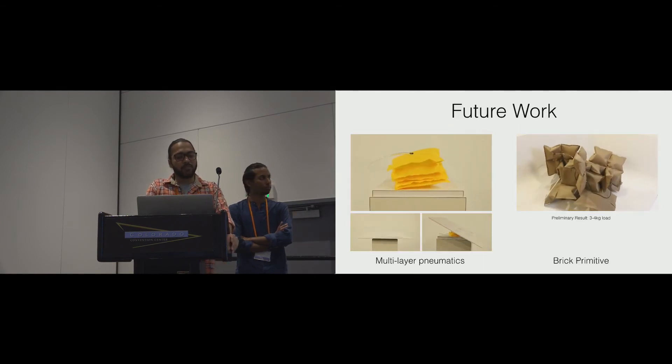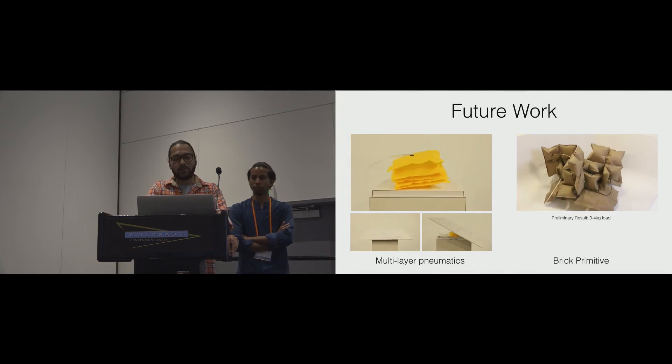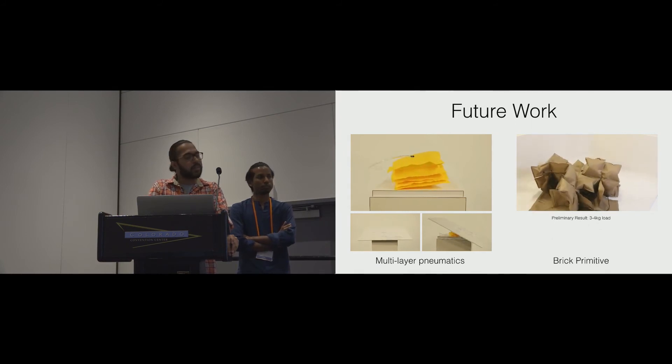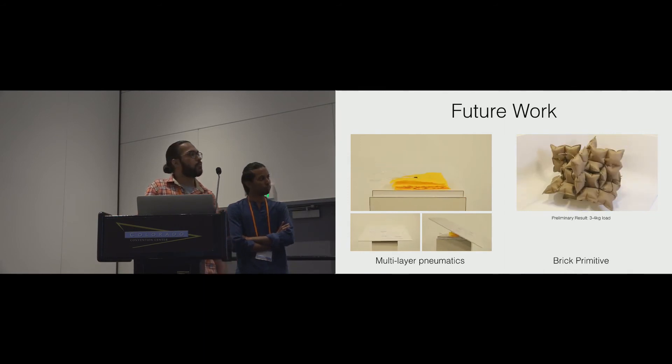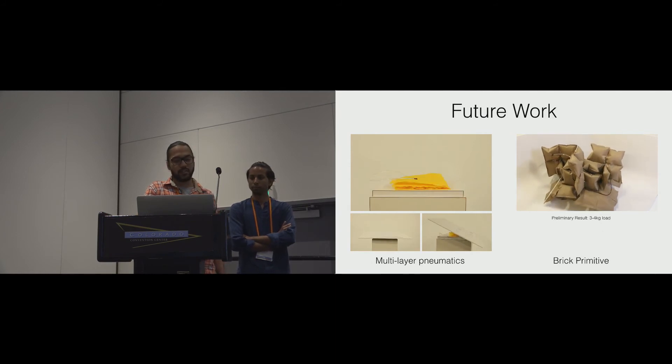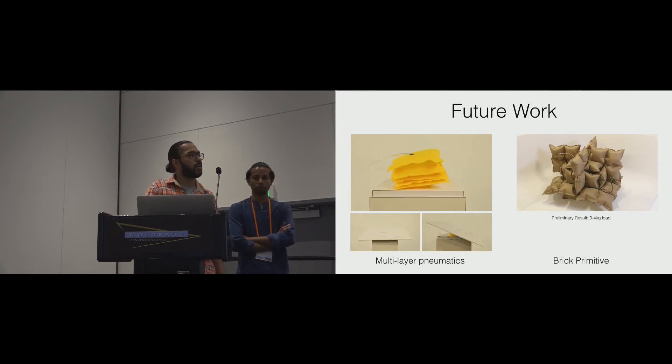So far through the examples, we demonstrated inflatables with two layers. However, we also explored stacking more than two layers to fabricate multi-layer pneumatics, as in the figure on the left, which can be used to actuate physical objects in a living room, for example. We also explored how inflatables can be modularized. The modules can mesh with each other, and a preliminary investigation showed a structure like this can take up to three to four kilograms of weight, while itself weighing 250 grams.